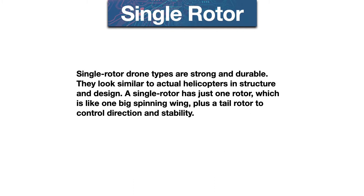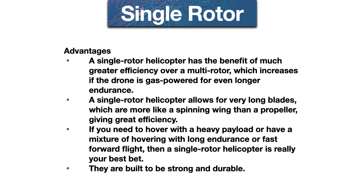Single rotor drone types are strong and durable, and look similar to actual helicopters in structure and design. A single rotor has just one rotor — like one big spinning wing — plus a tail rotor to control direction, but with much greater efficiency over a multi-rotor, which increases further if the drone is gas powered for even longer endurance. A single rotor helicopter allows for very long blades, more like a spinning wing than a propeller. If you need it to hover with a heavy payload, or have a mixture of hovering with long endurance or fast forward flight, they are your best bet.